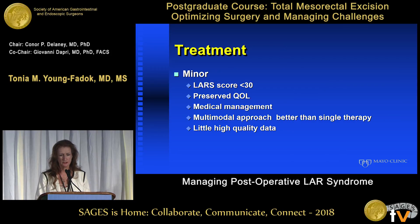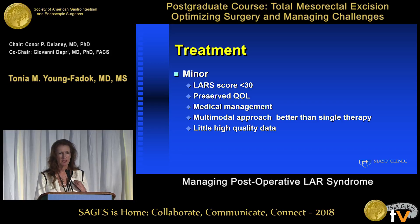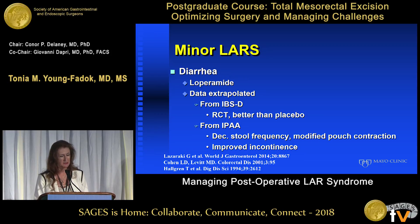Treatment of minor LARS, a score of less than 30: these patients generally have preserved quality of life overall, and their symptoms are more of an annoyance rather than truly affecting overall quality of life. This can usually be medically managed, and a multimodal approach is generally better than any single intervention, though there's very little good data. For patients with diarrhea, medications to slow it down such as loperamide are useful, though the data is extrapolated from patients with diarrhea-predominant IBS and from patients with ileal pouches.